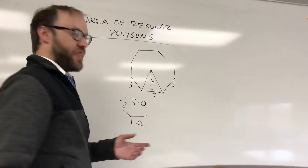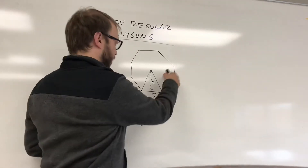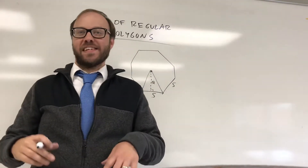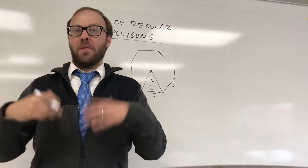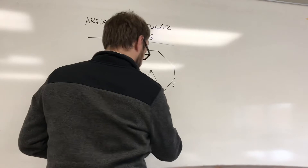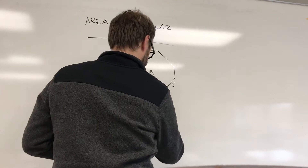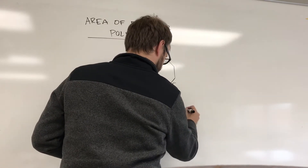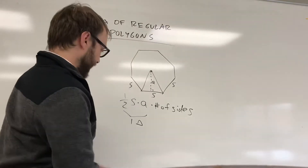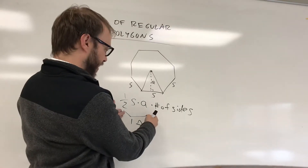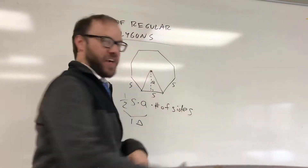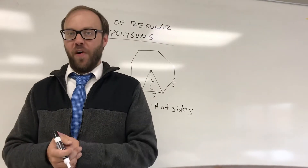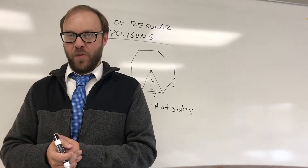Then I'm going to multiply by the number of triangles. The number of triangles is the same as the number of sides. So I'm going to multiply by the number of sides. The area of one triangle times the number of sides — that would be the overall area.